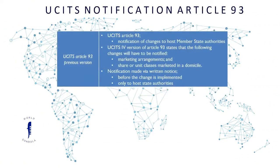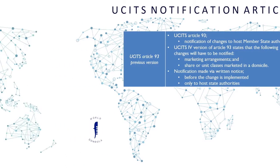UCITS Article 93 deals generally with UCITS notification and, in specific, with its notification of changes made to the information provided to host state authorities when applying for marketing authorization of a UCITS.